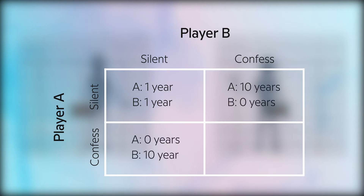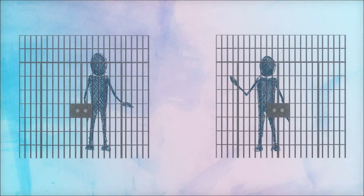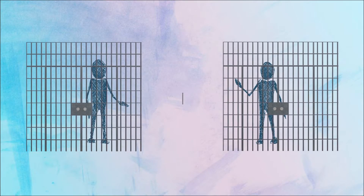If both of them confess, both of them receive imprisonment for five years. So logically, the best option is for both of them to remain silent, right? That way they both get the least jail time. It's obvious. But the dilemma comes in because neither prisoner is aware of what the other prisoner chose and they have no reason to trust each other.